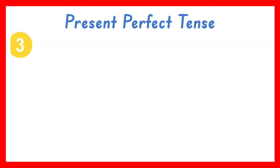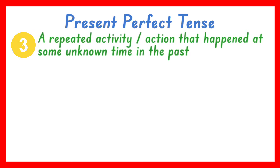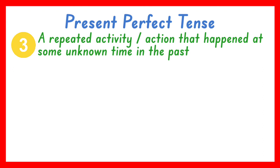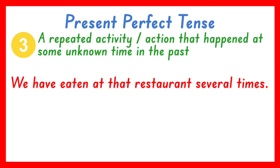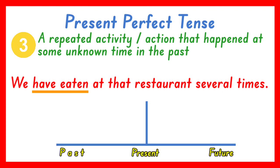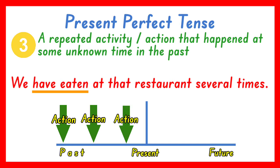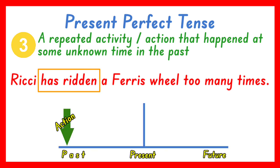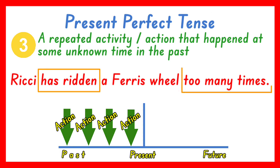We also use the present perfect tense for a repeated action that happened at some unknown time in the past. For example: We have eaten at that restaurant several times. The verb in the present perfect tense is have eaten, and this sentence tells an action that happened repeatedly using several times, but the exact dates are not known. Another one: Richie has ridden a ferris wheel too many times already. The verb is has ridden, and this sentence indicates that Richie rode a ferris wheel repeatedly by using the words too many times.